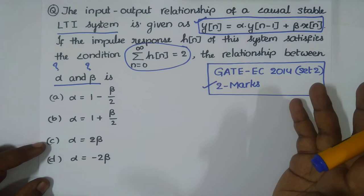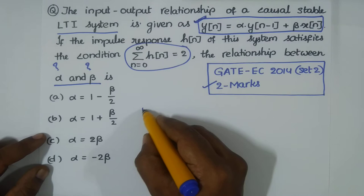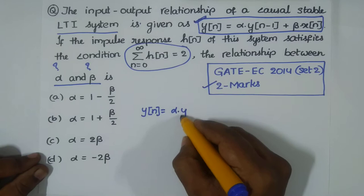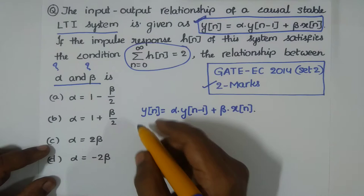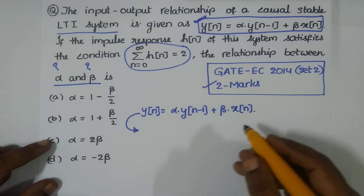Let me accept this system as it is. The system is given to us: y[n] = α·y[n−1] + β·x[n]. Now, Z-transforms are very helpful in designing discrete-time systems, especially those described by linear constant coefficient difference equations.